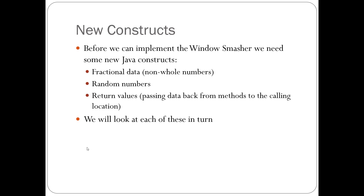Now we need to look at some new elements included in this game. There are three areas to cover: first, dealing with fractional data — everything we've done so far has been integers; second, dealing with random numbers; and third, dealing with methods that send data back after we've called them. The rest of the lecture is devoted to looking at each of these in turn.